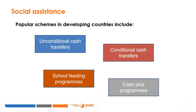Most conditions aim to promote behavior that improves outcomes for children or social development. Transfers are therefore usually handed out to parents or caregivers. Like unconditional cash transfers, conditional cash transfers also tend to be targeted to the poorest and most vulnerable groups in society. Because of the types of conditions attached, they are usually directed to families with children.